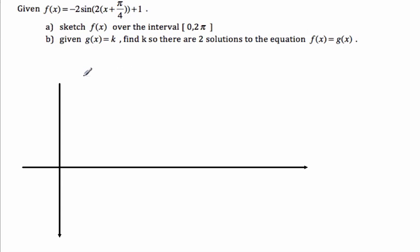Alright, for this example we got f(x) = -2sin(2(x + π/4)) + 1. Let's sketch it over the interval [0, 2π].